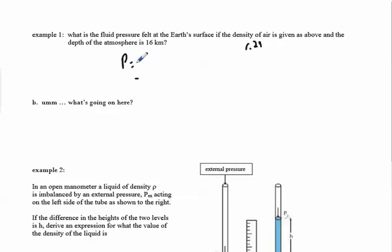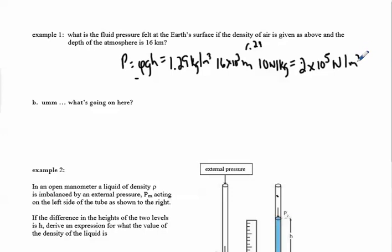And the depth of the atmosphere is 16 kilometers. So this is pretty straightforward. Pressure is rho gh, which is equal to 1.29 kilograms per meter cubed times 16 times 10 to the 3 meters. That's our depth, and I'm just going to use g as 10. So this is going to equal, I'll punch numbers in the calculator, and I get 2 times 10 to the 5th newtons per meter squared.